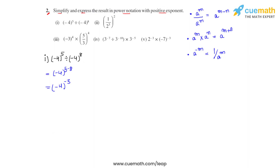We can see there is a negative sign inside the brackets. Whenever a negative is raised to an odd power, the result will also be negative. So we finally write this as negative 1 over 4, whole raised to 3.